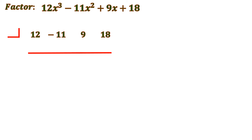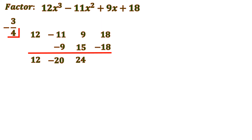Finding the right number takes time since the numbers are large. The number that works is negative three-fourths. Bring down 12; 12 times negative three-fourths is negative 9. Combining negative 11 and negative 9 gives negative 20. Negative 20 times negative three-fourths is positive 15. Then 9 plus 15 is 24. And 24 times negative three-fourths is negative 18. So 18 plus negative 18 is 0 — no remainder. The resulting polynomial from the bottom row is 12x squared minus 20x plus 24.